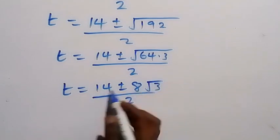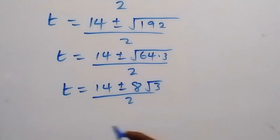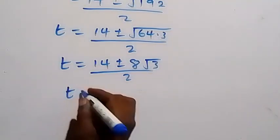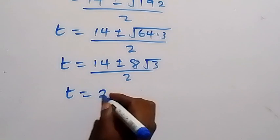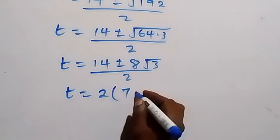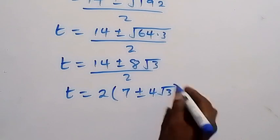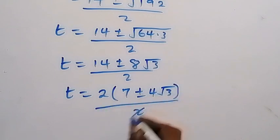And these 2 can go in 14 and 8. And in another way, we can factor 2 out from there. So t equals 2 into bracket 7 plus or minus 4 root 3, then divided by 2. 2 cancels. Then we have t equals 7 plus or minus 4 root 3.